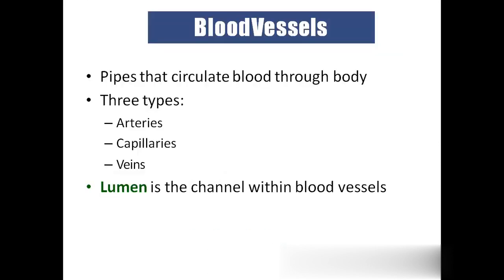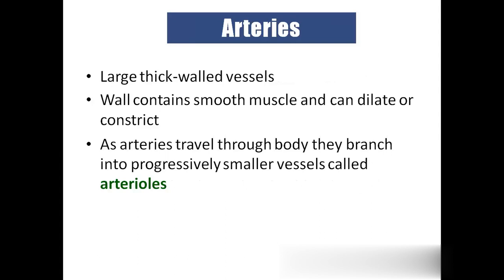Blood vessels: we have three types. Arteries carry blood away from the heart. Capillaries are the smaller blood vessels present inside the tissue and inside the organ. Veins are blood vessels that bring blood towards the heart. Lumen is the empty space present inside the blood vessel. Arteries are usually thick-walled, made up of smooth muscle — not under our control — that can dilate (enlarge) or constrict (narrow). Arteries travel throughout the body and give branches called arterioles.